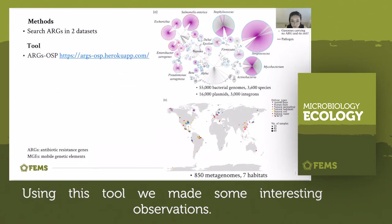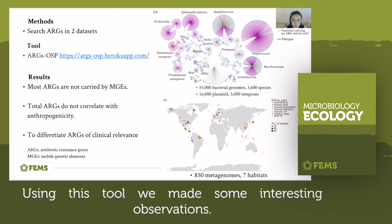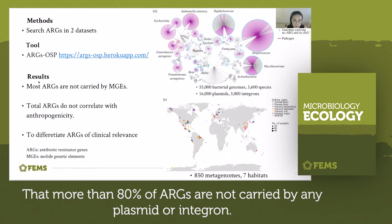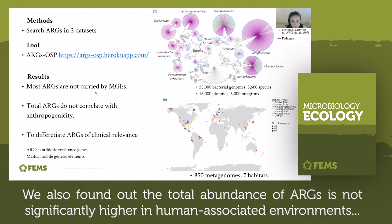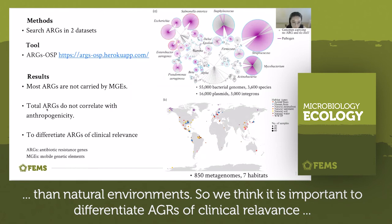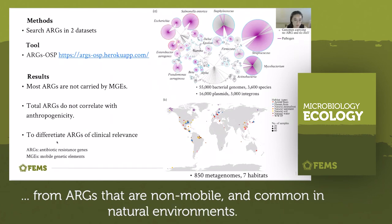Using this tool, we made some interesting observations: more than 80 percent of ARGs are not carried by any plasmid or integron, meaning they are more likely to be non-mobile. We also found that the total abundance of ARGs is not significantly higher in human-associated environments than in natural environments. So we think it's important to differentiate ARGs of clinical relevance from ARGs that are non-mobile and common in natural environments.